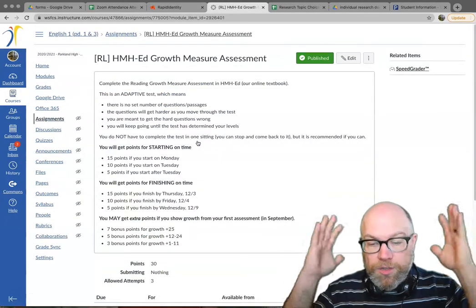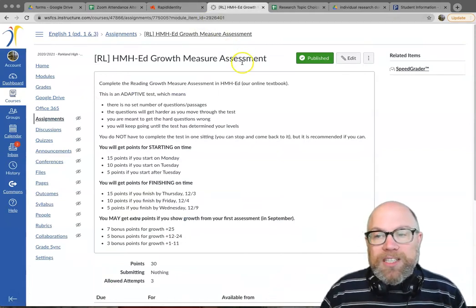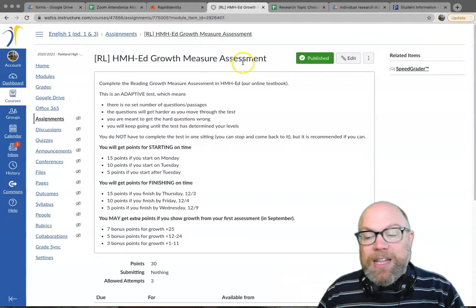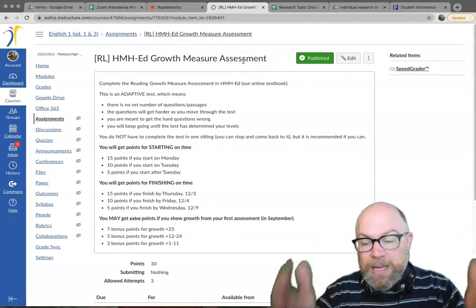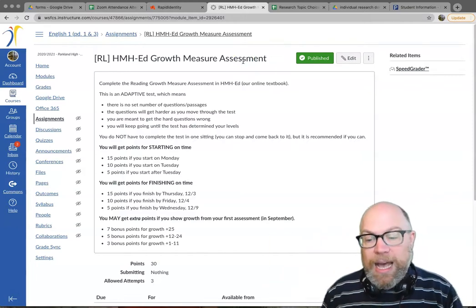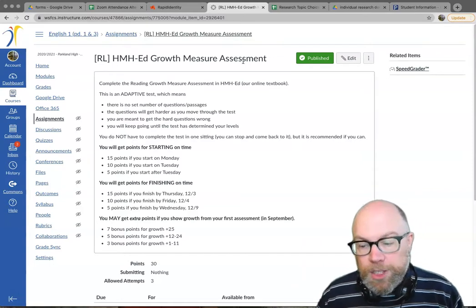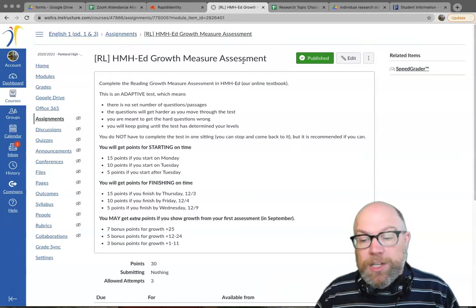This is a, so there's nothing to do. There's nothing to submit on this assignment. You are going to take the growth measure assessment that is in HMH ed, the online textbook, which I'll show you in a moment. Many of you took this in September. This is the followup to that to see how you're doing now after a semester's worth of COVID English. Some of you did not take it. And that's okay too.